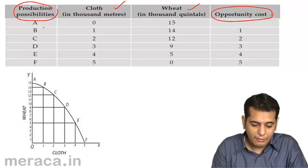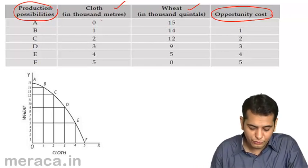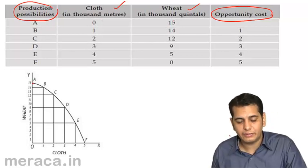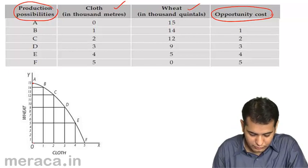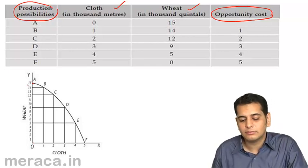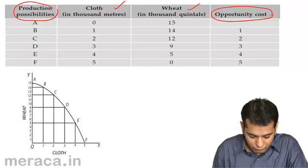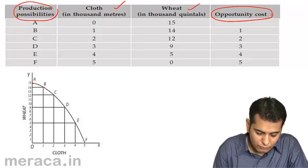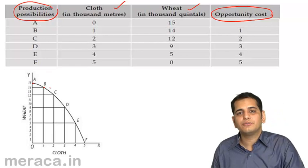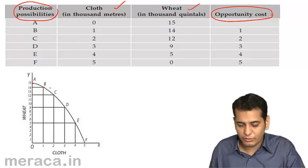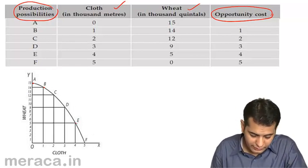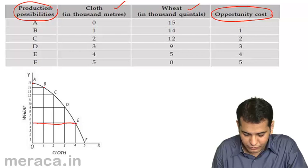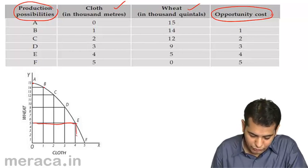If we take a close look at point A, we are producing 0 units of cloth and 15 units of wheat. At point B, we produce 1 unit of cloth and 14 units of wheat. So point B gives us a combination wherein we are producing 14 units of wheat and 1 unit of cloth. Likewise, at point E, we are producing 5 units of wheat and 4 units of cloth.